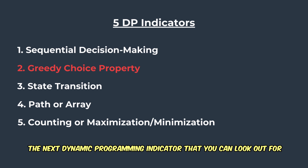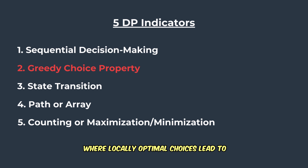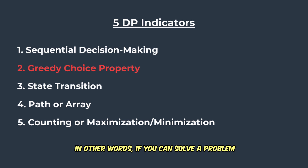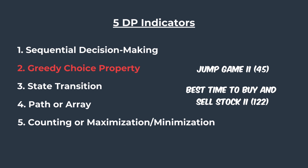The next dynamic programming indicator is the greedy choice property. If a problem exhibits a greedy choice property — where locally optimal choices lead to a globally optimal solution — those are also often solvable with DP. In other words, if you can solve a problem using a greedy algorithm, you can also solve it using dynamic programming. Some examples of this are Jump Game II and Best Time to Buy and Sell Stock II.